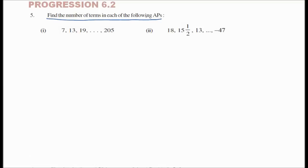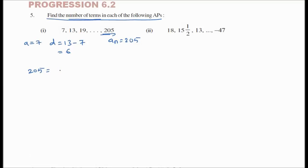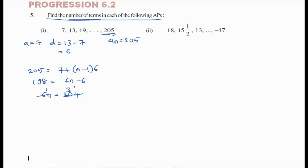Find the number of terms in the following AP. Here a = 7, d = 13 - 7 = 6, and an = 205. Using an = a + (n-1)×d: 205 = 7 + (n-1)×6, so 198 = 6(n-1), giving 6n = 204, and n = 34. The number of terms is 34.